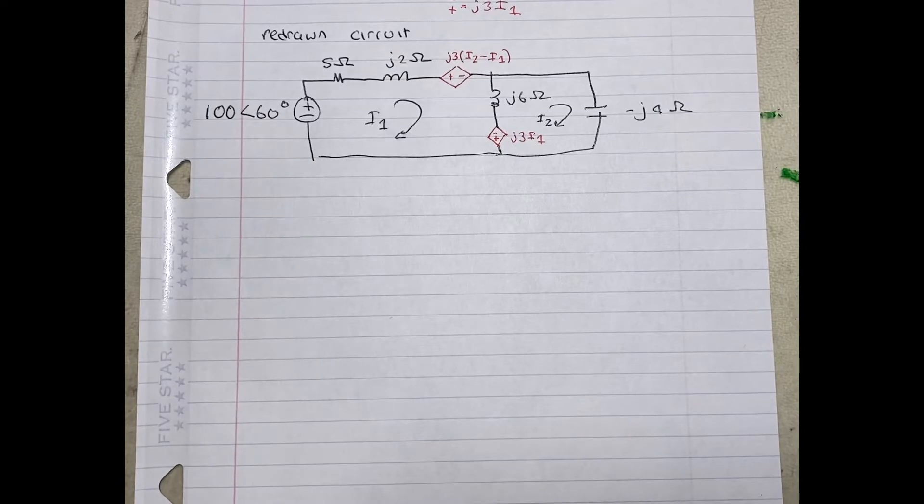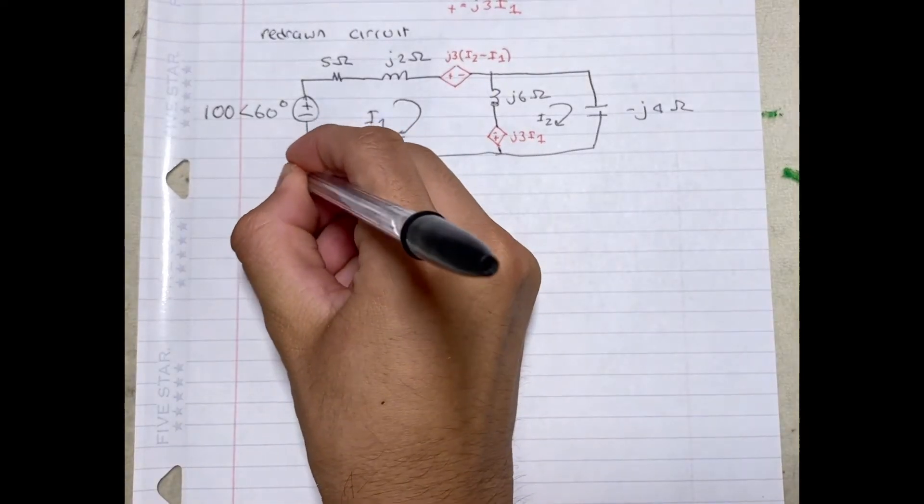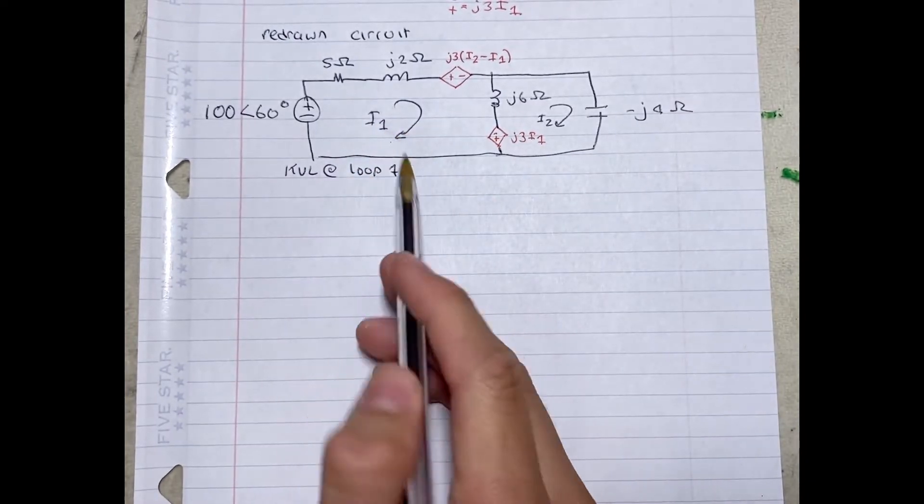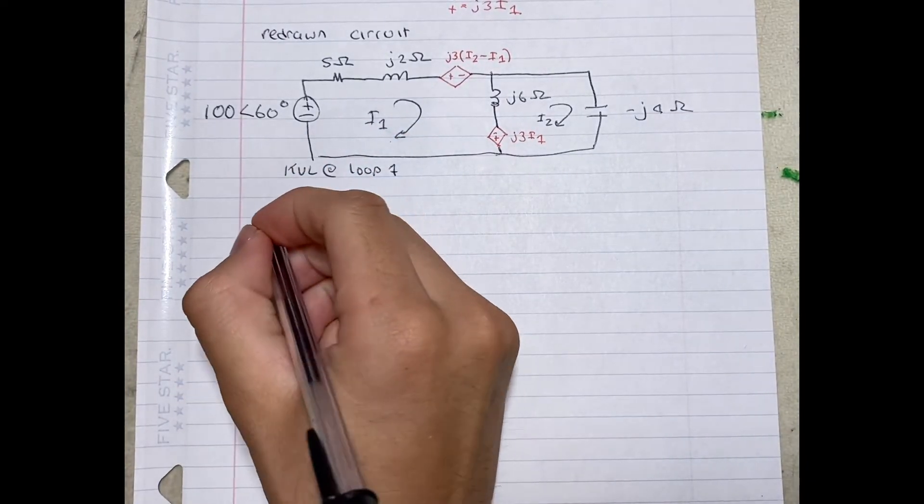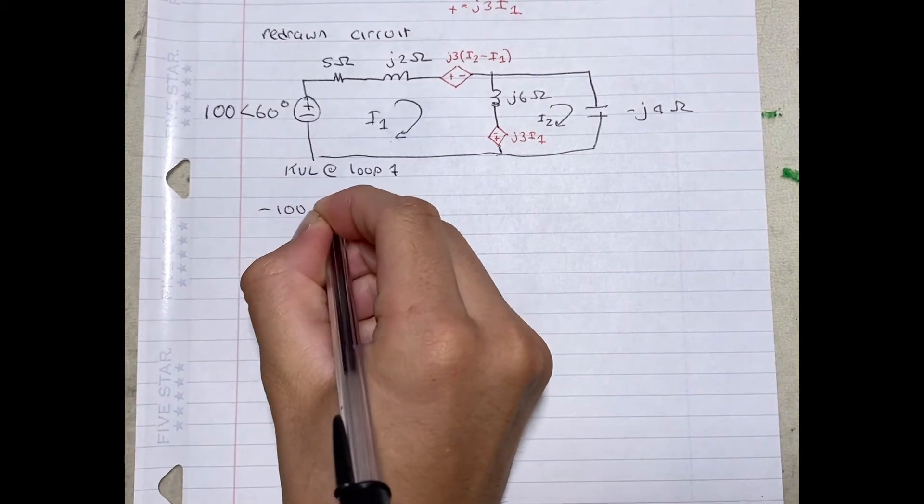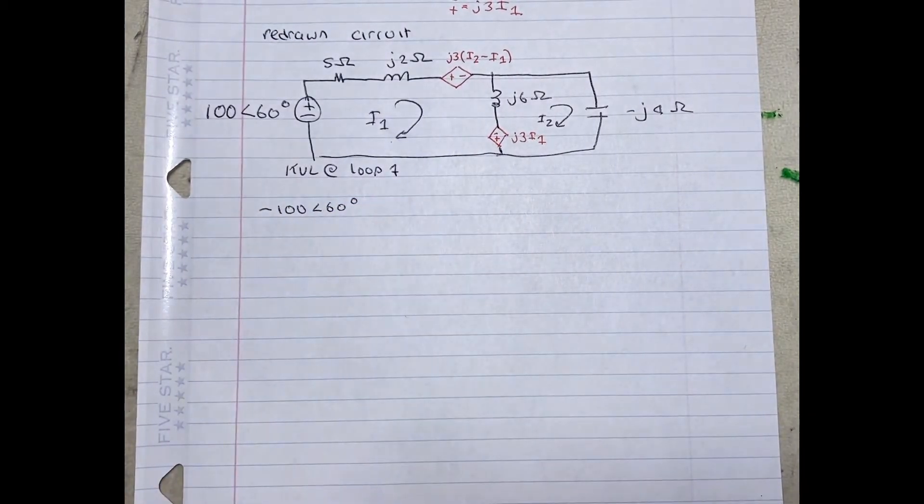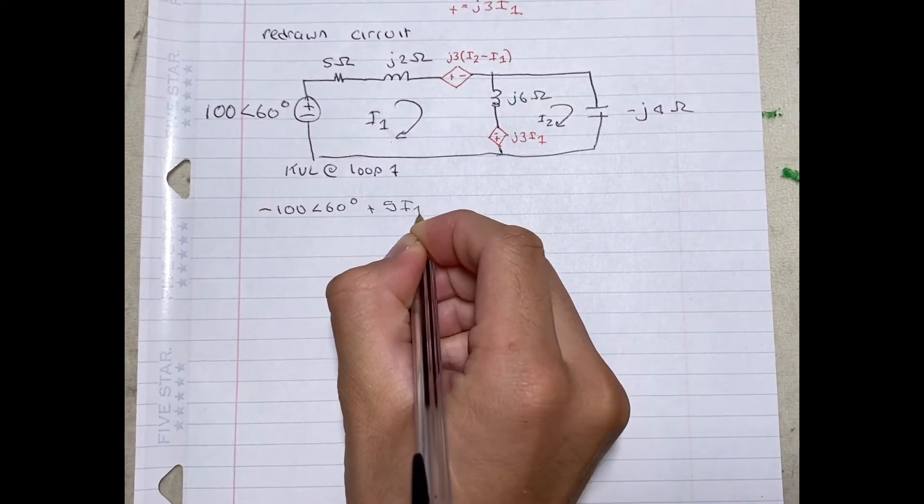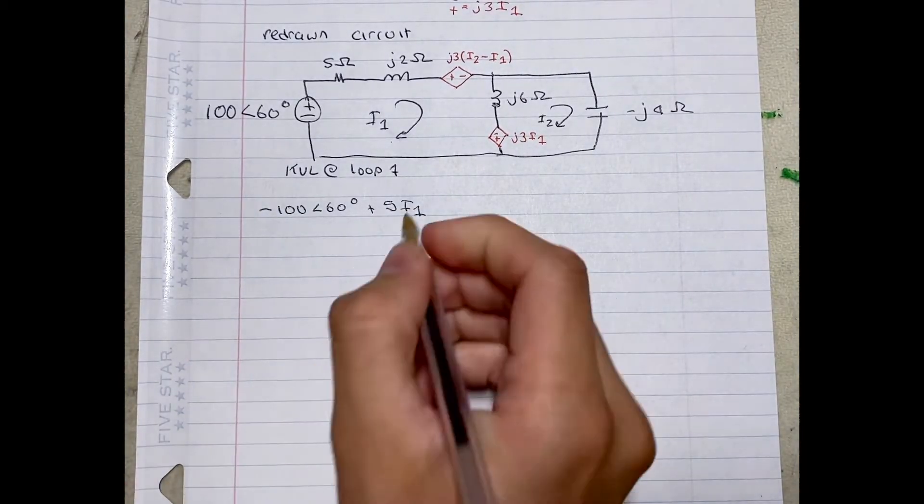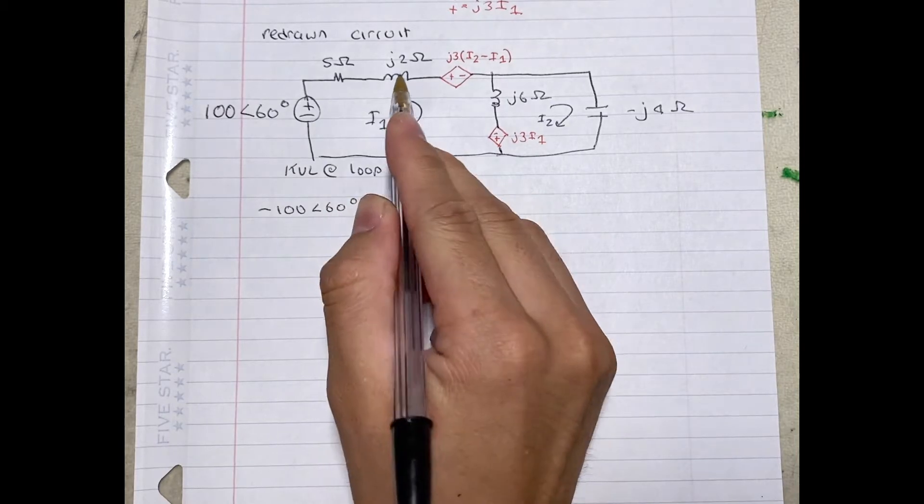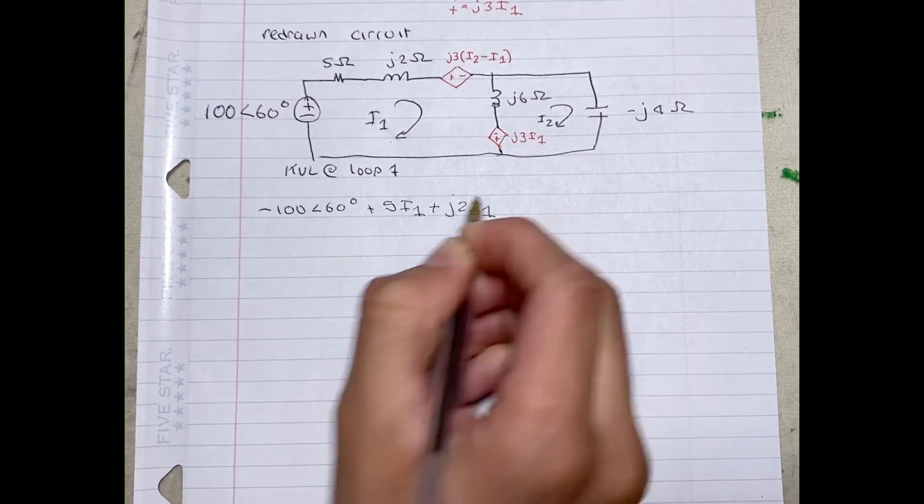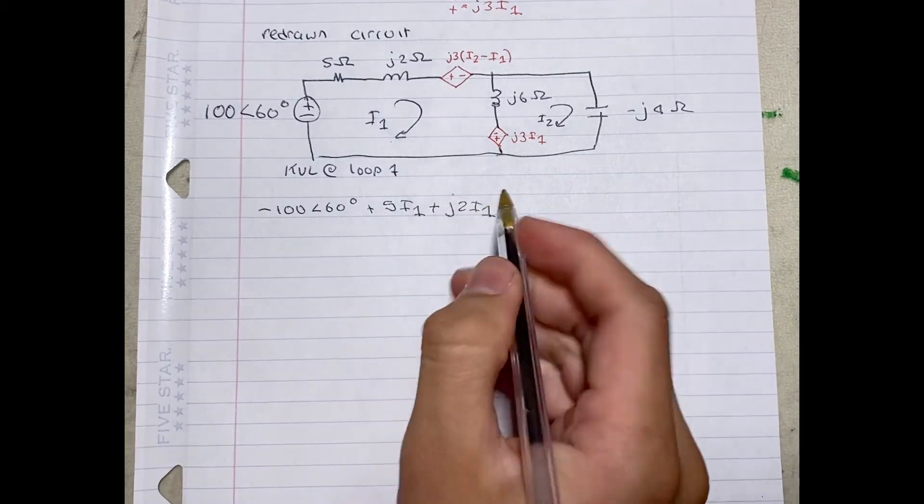Here I've redrawn the circuit so it's easier for you to see. Now we're going to need to perform a KVL at loop 1. And we'll be starting at the source. So we'll get negative 100 angle 60 degrees, plus 5 of I1, plus J2 of I1, plus J3 of I2 minus I1.